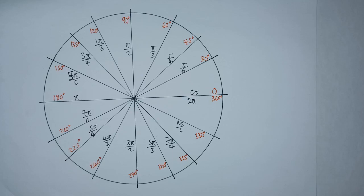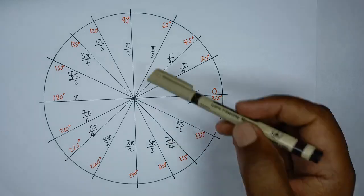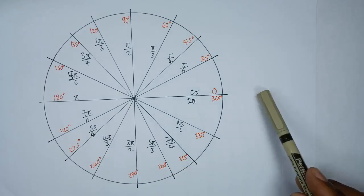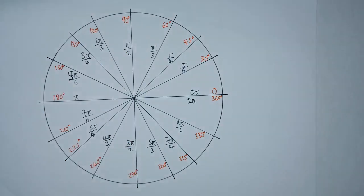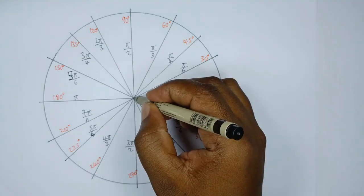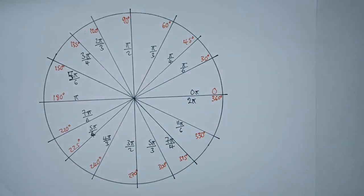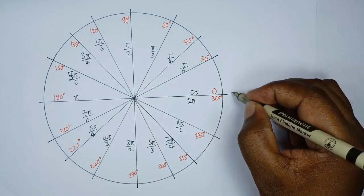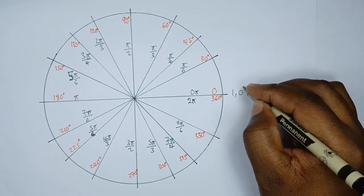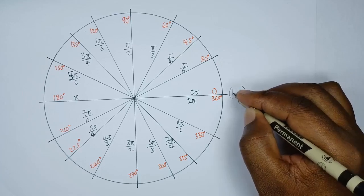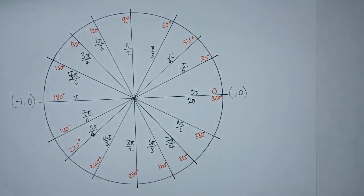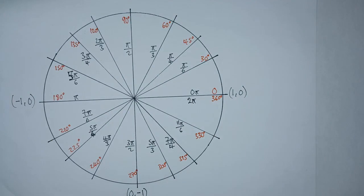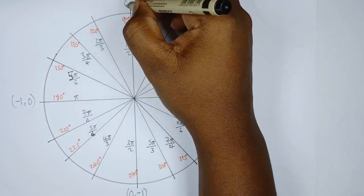The next thing is to think of this unit circle as a Cartesian plane, meaning this will be our y-axis and this will be our x-axis. Since it's a unit circle, the radius is 1, meaning the distance from the origin to the edge is 1. At the point on the positive x-axis the coordinate is (1, 0), on the negative x-axis it's (−1, 0), at the bottom it's (0, −1), and at the top it's (0, 1).